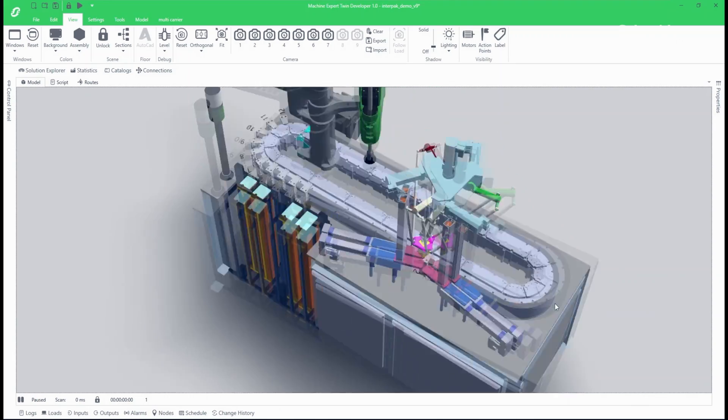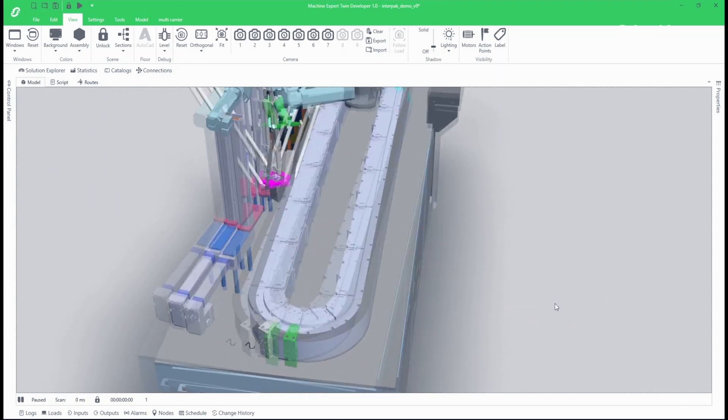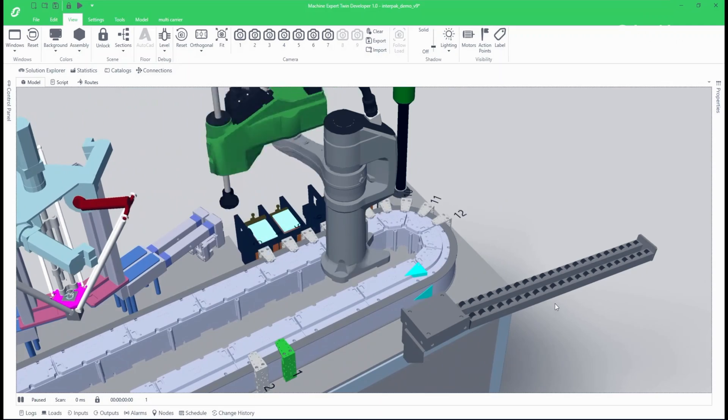There must be a better way. Now, there is. With EcoStruxure Machine Expert Twin, you can reduce time to market and deliver higher quality at lower costs.